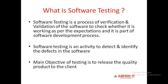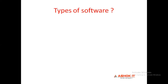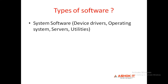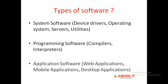So if anybody asks you what is software testing, you can cover all these points. Next, coming to the types of software — we have various types of software. First is system software, second is programming software, and third is application software.